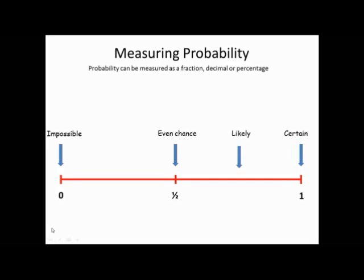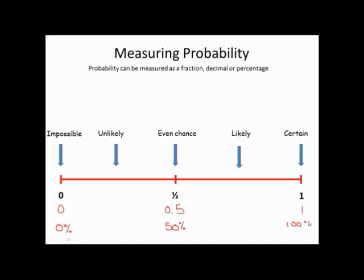If something is between a half and 1, then we say it is a likely event. The closer you are to 1, the more likely it is that this probability will happen. If something is between 0 and a half, then we would say it's unlikely it's going to happen, and the closer to 0 you are, the more unlikely it is. You can express these as a fraction, decimal, or percentage. As decimals: 0, 0.5, and 1. As percentages: 0%, 50%, or 100%. Most of the questions we do will probably deal in fractions or decimals.